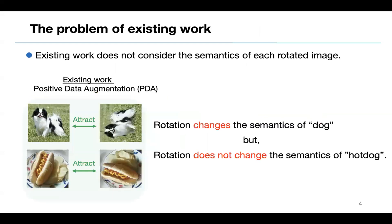One problem with existing methods is that they do not take into account the semantics of each rotated image. For example, rotation changes the semantics of a dog, but rotation does not change the semantics of a hot dog.